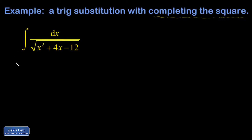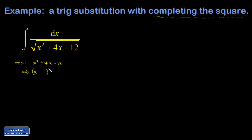So if I do the completing the square process — I'll just say CTS — I have x squared plus 4x minus 12. All I'm trying to do with completing the square is take care of all these variable pieces with a single squared binomial, and then make adjustments so it's equal to what I started with. So I'm just trying to guess: if I were to square a binomial to give me an x squared plus a 4x, what would that binomial be?